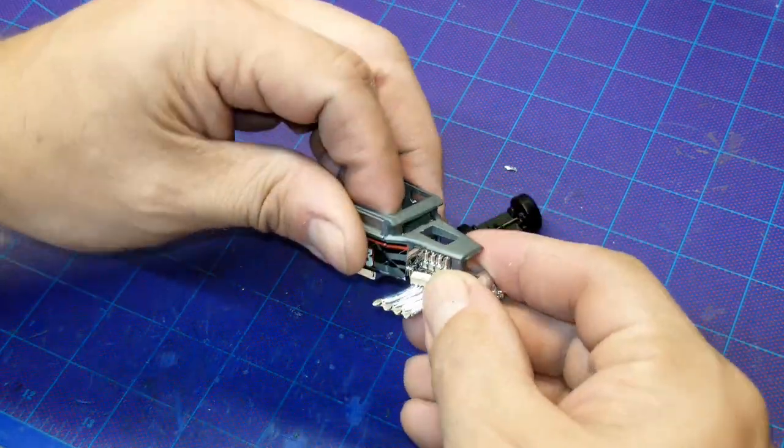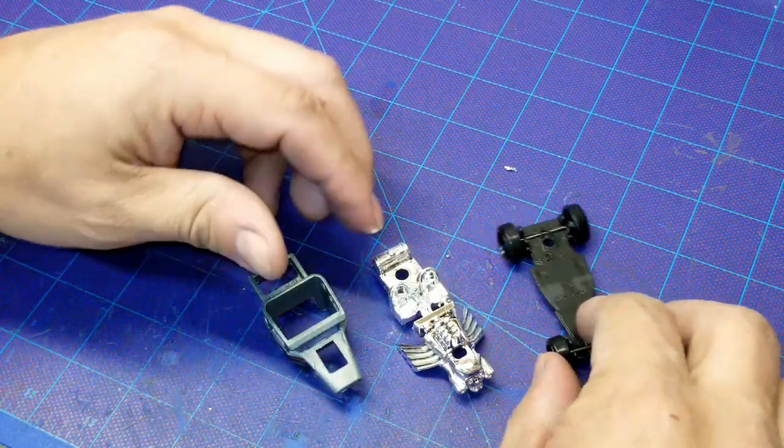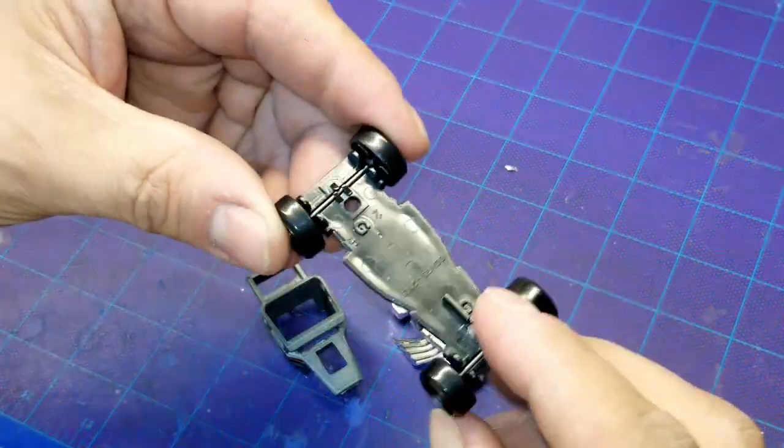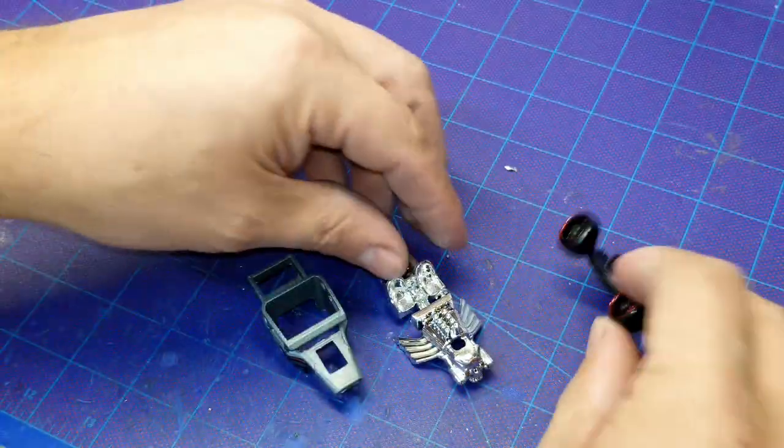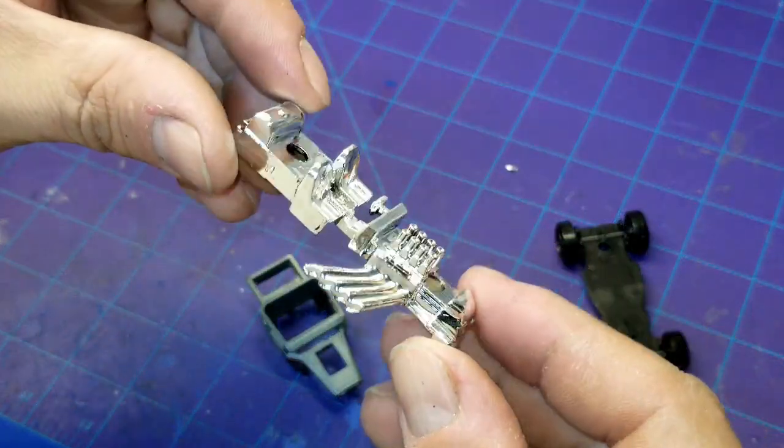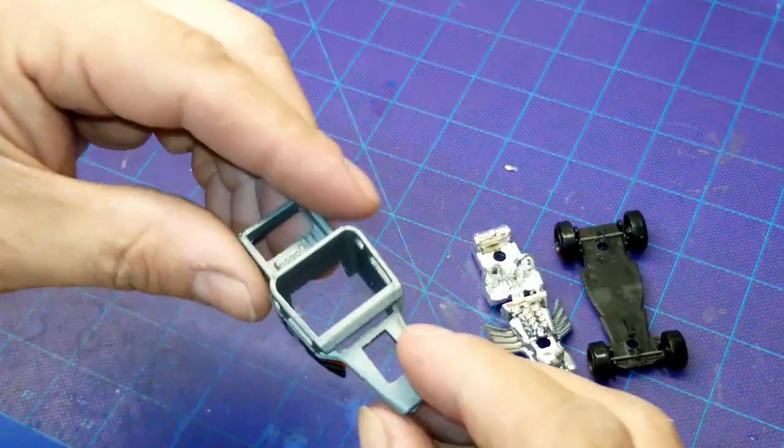I guess we'll get down to business here, get this thing cut up, get them wheels off. I'm going to strip all that chrome paint off of the interior by popping that into a little jar of some Super Clean. That'll eat that chrome right off in no time and we'll get that bad boy down to all black.